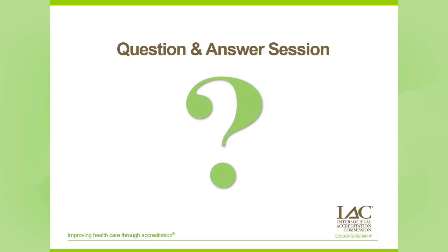This first question takes us back to the beginning of the talk. There's some question about whether large centers who specialize in congenital heart disease are opening labs for adults. The questioner's lab doesn't have enough congenital heart patients to be proficient, and they don't get surgical records prior to the echo. It is hard to become proficient in these types of echoes if your volumes are very low. This is a problem facing many institutions with a growing volume of patients, and unfortunately there isn't a simple answer.